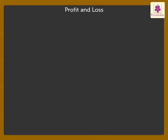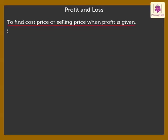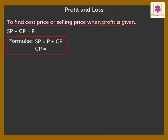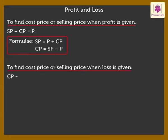Further, let's see how to find the cost price or selling price when profit is given. We know, selling price minus cost price equals profit. Therefore, selling price is equal to profit plus cost price, and cost price is equal to selling price minus profit. Now, let's see how to find the cost price or selling price when loss is given. We know, cost price minus selling price equals loss. Therefore, cost price is equal to loss plus selling price, and selling price is equal to cost price minus loss.